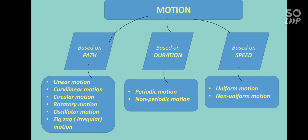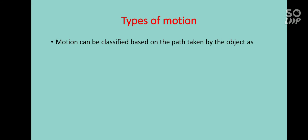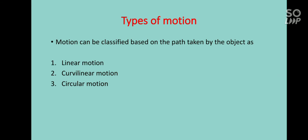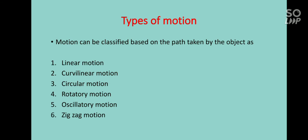In this video class we are going to see the types of motion based on path. Based on path, motion is classified into linear motion, curvilinear motion, circular motion, rotatory motion, oscillatory motion, and zigzag motion or random motion.